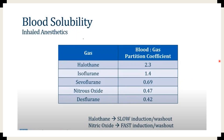Shown on this slide is a table of blood-gas partition coefficients for some inhaled anesthetics. Halothane has a relatively high blood-gas partition coefficient, meaning it has high solubility in the blood. If you use halothane to induce anesthesia, it will take a long time — there will be a slow induction — and it will also take longer to wash out. In contrast, nitrous oxide has a very low blood-gas partition coefficient. This means its anesthetic effects are very quick in onset, and at the end of the case, when you stop giving nitrous oxide, it will wash out very quickly as well.